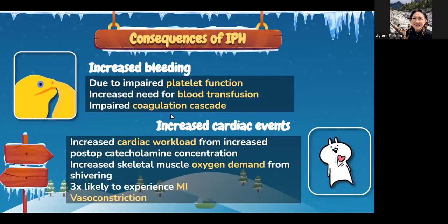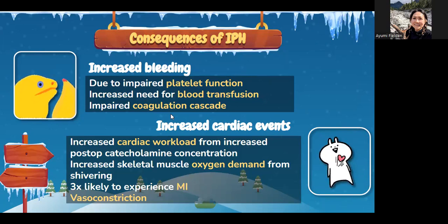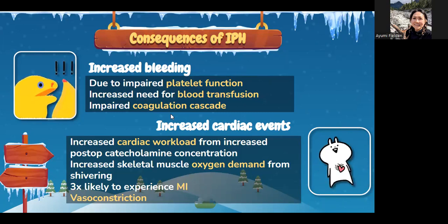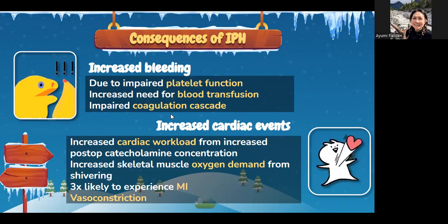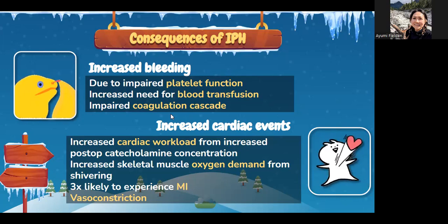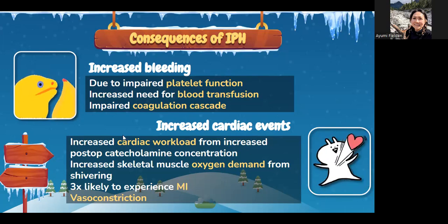Another consequence of unplanned hypothermia is increased bleeding due to impaired platelet function and impaired coagulation cascade, leading to an increased need for blood transfusion. Patients also don't do well after transfusions, so we want to avoid them if at all possible. Additionally, hypothermic patients are three times more likely to experience MI, because hypothermia increases cardiac workload from elevated post-op catecholamine concentration and increased skeletal muscle oxygen demand from shivering.